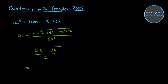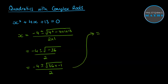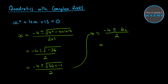Now expanding on that, we can sort this out. So minus 4 plus or minus the square root — this is going to be the same as the square root of 36 times negative 1, all over 2. So that becomes the square root of 36 times the square root of minus 1. Well, the square root of 36 is just 6, and the square root of minus 1 is i, all over 2. Now we can divide through by that 2, so we get negative 2 plus or minus 3i.